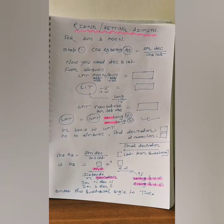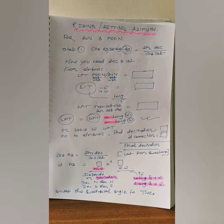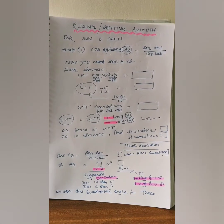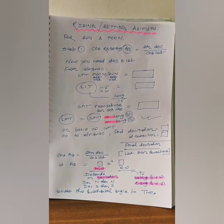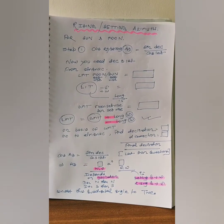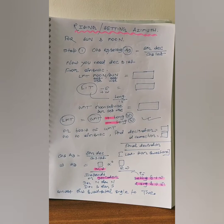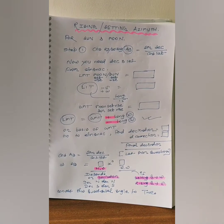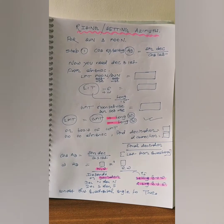Let's begin by writing the formula. You can easily identify a rising/setting question because in the question it will be mentioned as azimuth of the rising sun, setting sun, rising moon, or setting moon. So you know you have to use this formula: cos(rising/setting azimuth) is equal to sine(declination) upon cos(latitude).